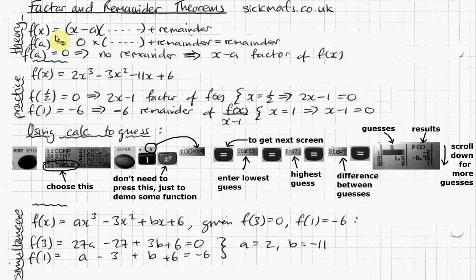So the remainder theorem is when you get the remainder, when you get the zero, that's factor theorem. It's basically the same thing, just two sides of the same coin. Now that's the theory done, let's do a bit of practice, and it's really easy.